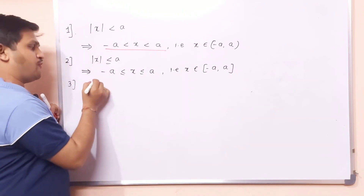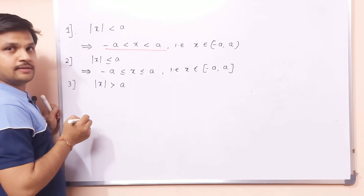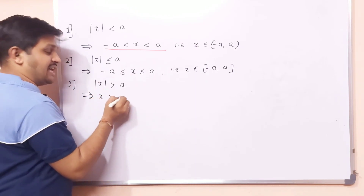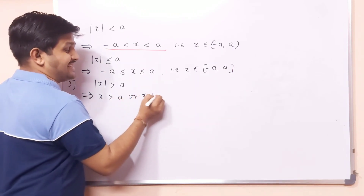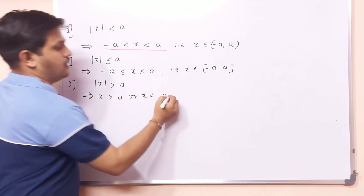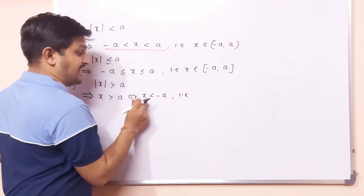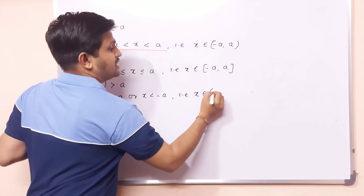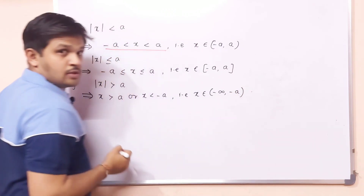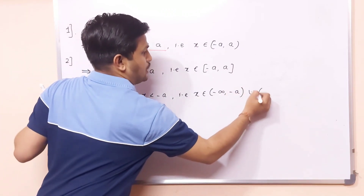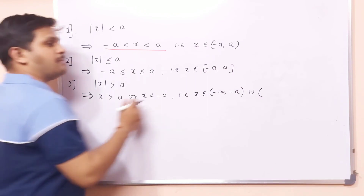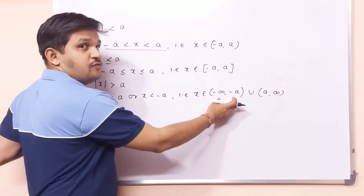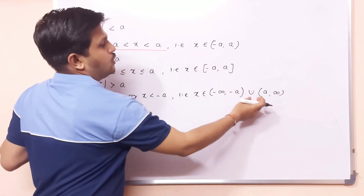Third property, very important: if |x| > a, what does it imply? x will be greater than a or x is less than −a. In interval notation, x belongs to (−∞, −a) union (a, +∞) — both open intervals since it is strictly greater than.